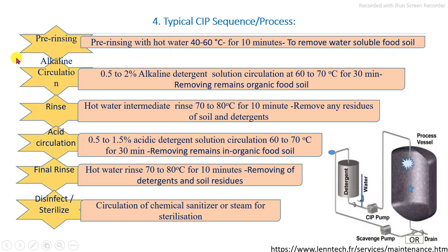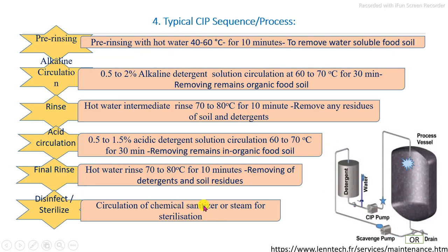These are the main five stages in which complete cleaning is carried out. After that, the final stage is the disinfection or sterilization process, in which chemical sanitizers such as hypochlorite solution or iodine-based solution are circulated, or superheated or saturated steam is used for complete sterilization of the processing line.